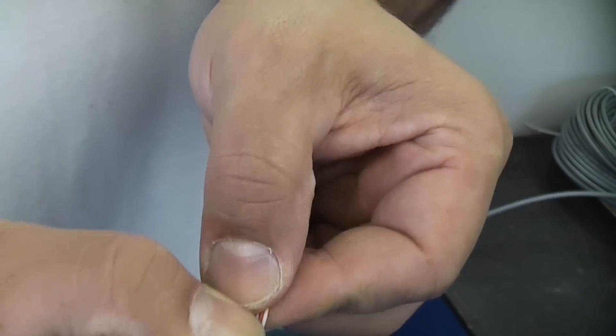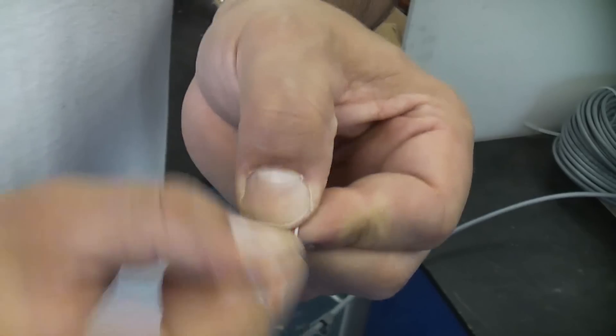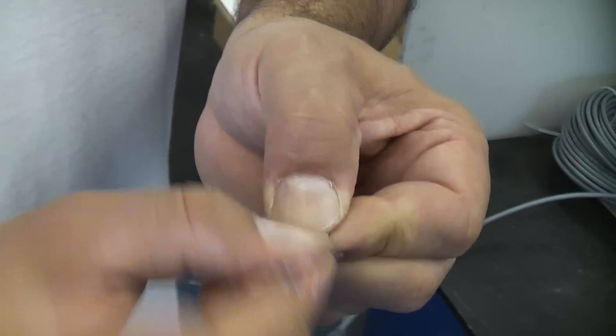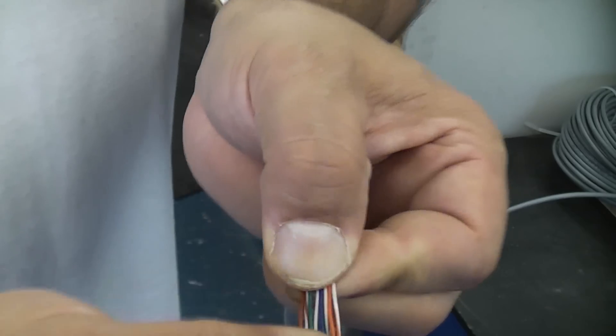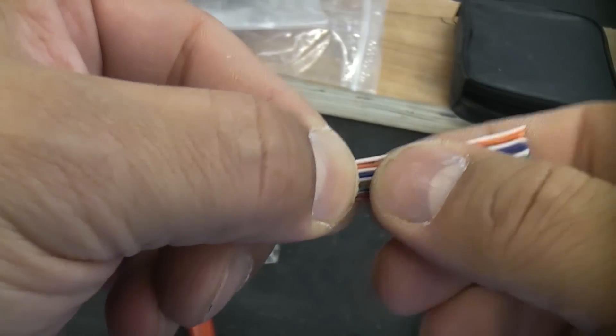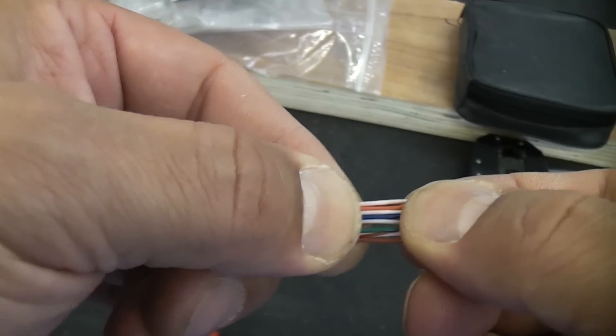So we're just going to get them all close together and we're just going to bend them like that until they straighten out. We've now got all the wires in the correct order so we're just going to straighten them out the best we can.